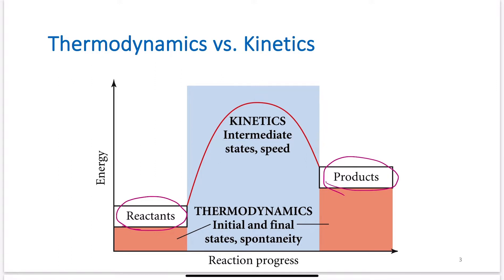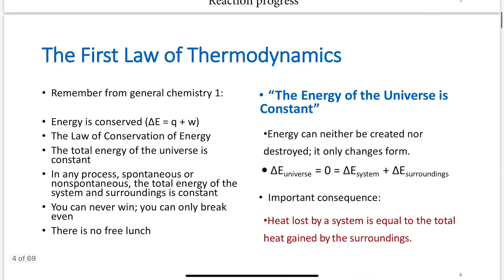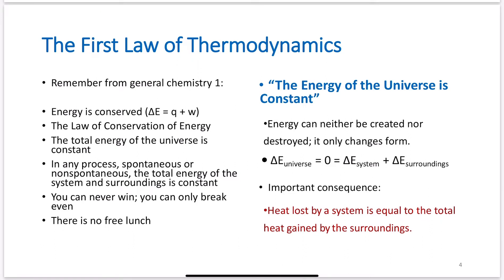As a review of the first law of thermodynamics: energy is conserved. ΔE = q + w, where q is heat and w is work. Energy cannot be created nor destroyed, only changed in form. The total energy of the universe is constant in any process, spontaneous or non-spontaneous. An isolated system — one that cannot exchange energy with its surroundings — has constant energy.